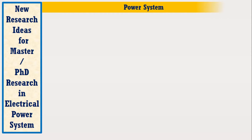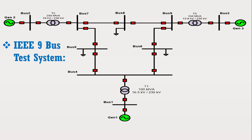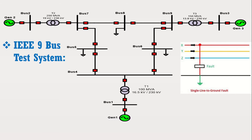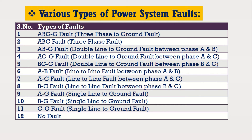Think of any power system. For convenience, I am considering the IEEE 9-bus test system as shown here. This power system may be subjected to different types of faults, such as symmetrical faults as well as unsymmetrical faults, as shown here. These faults may occur at any bus or line.